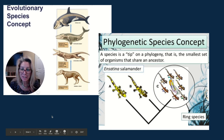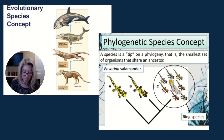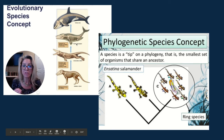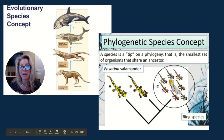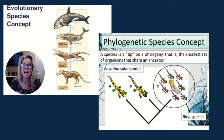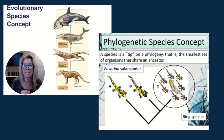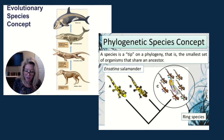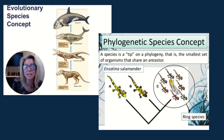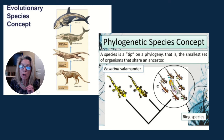The evolutionary species concept holds that members of a species share an evolutionary pathway. If you're not on the same evolutionary path, you're not the same species. The phylogenetic species concept — I've already introduced you to cladograms, but we'll talk more about this.